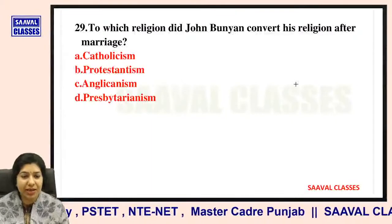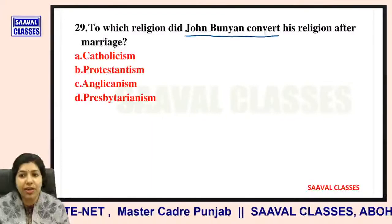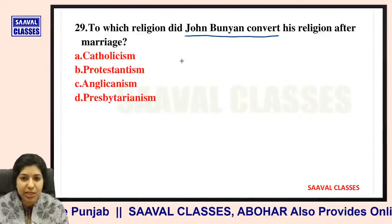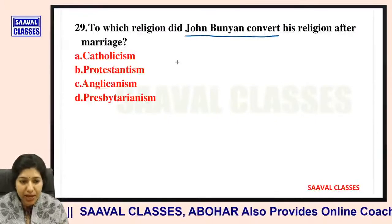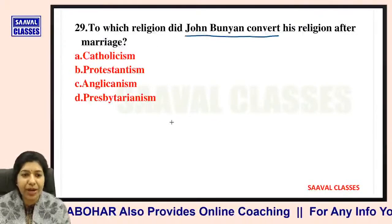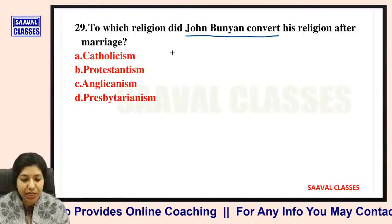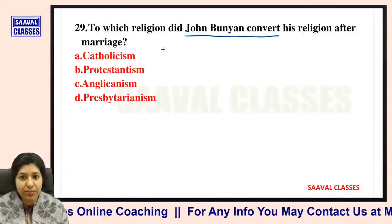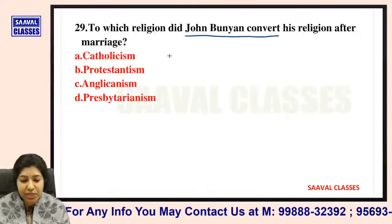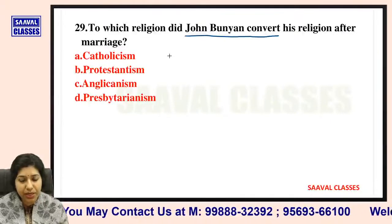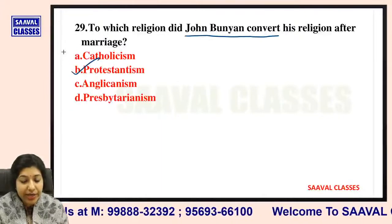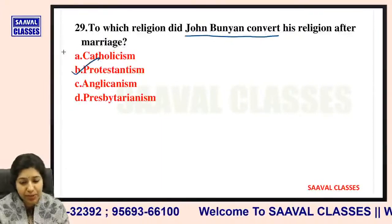Question number twenty-nine: To which religion did John Bunyan convert after marriage? Catholicism, Protestantism, Anglicanism, or Presbyterianism? John Bunyan converted to Protestantism — Protestant ban gaye the John Bunyan.